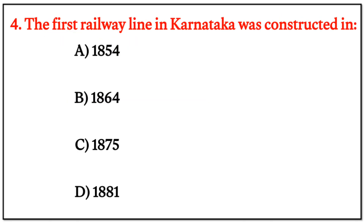MCQ Question 4: The first railway line in Karnataka was constructed in which year? The correct answer is option B — 1864.